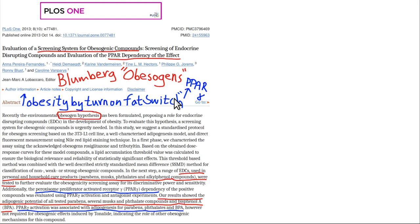This article is about a screening system for obesogenic compounds. These estrogenic compounds tend to activate what is called the PPAR gamma receptor — the peroxisome proliferator activated receptor gamma. It is good to know that term because it comes up a lot.